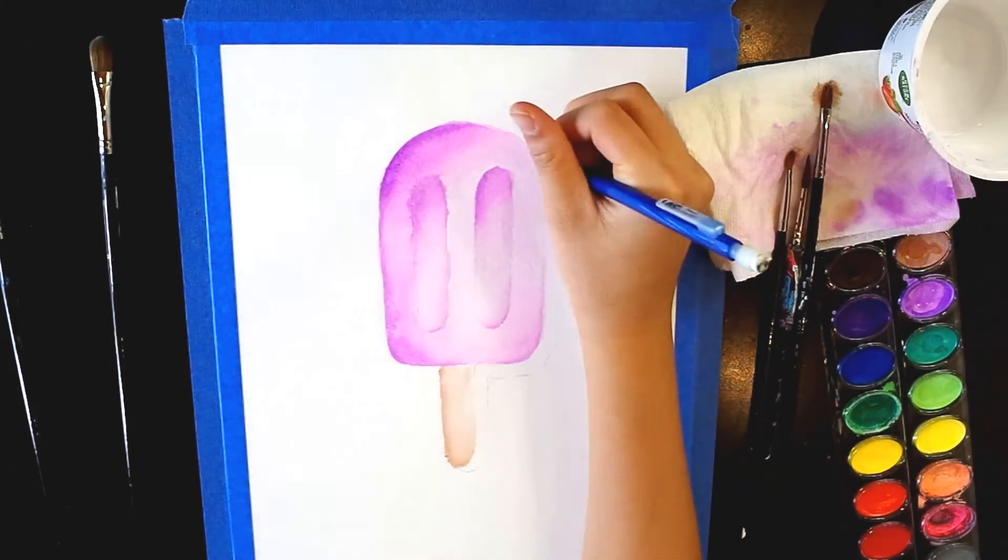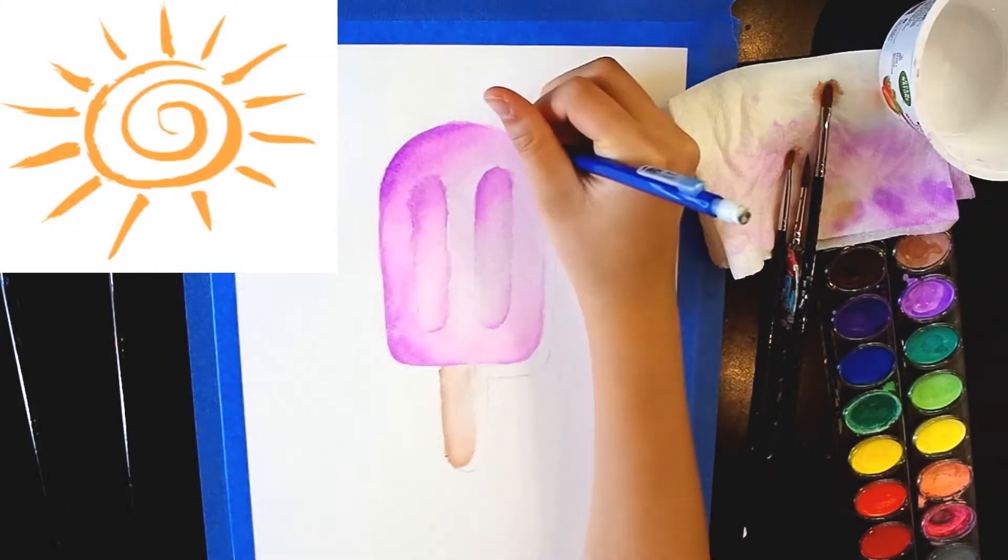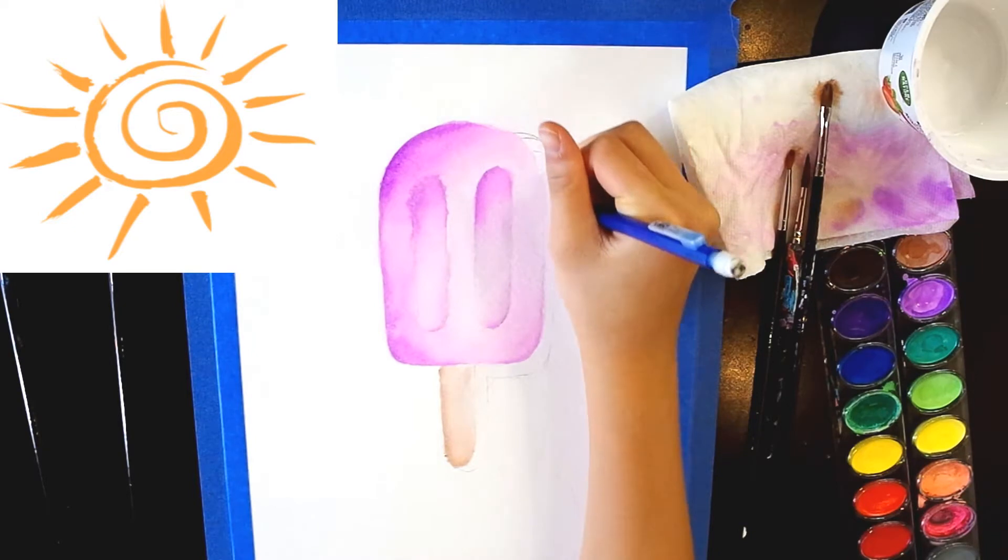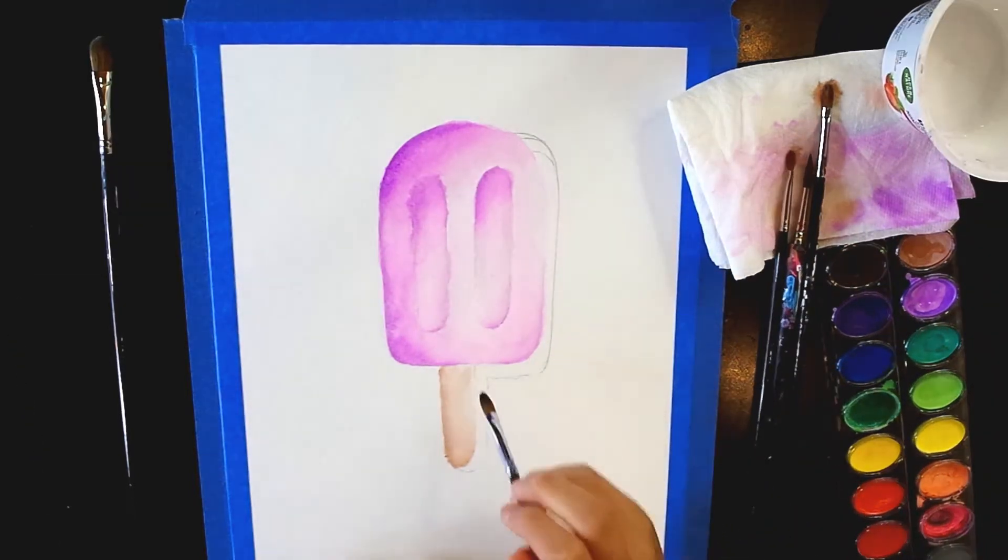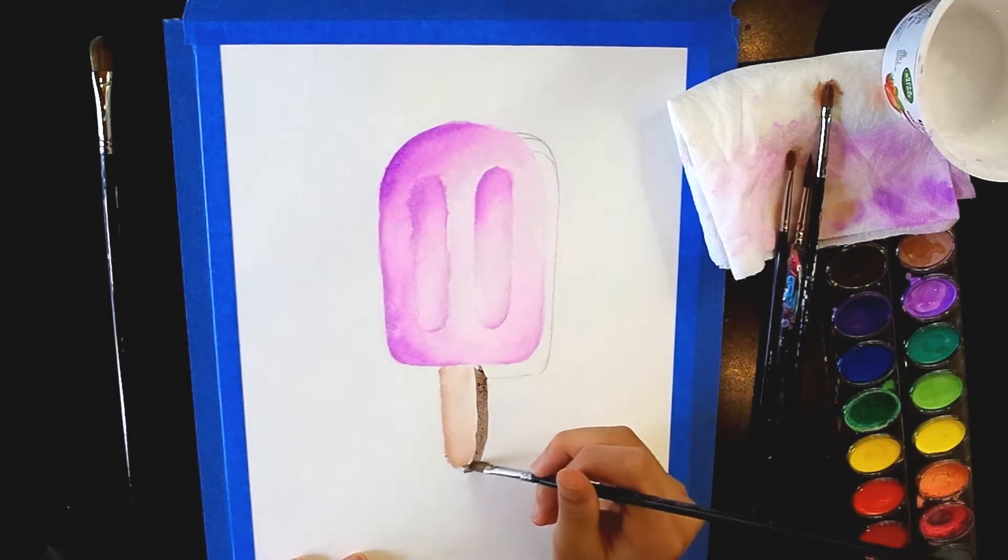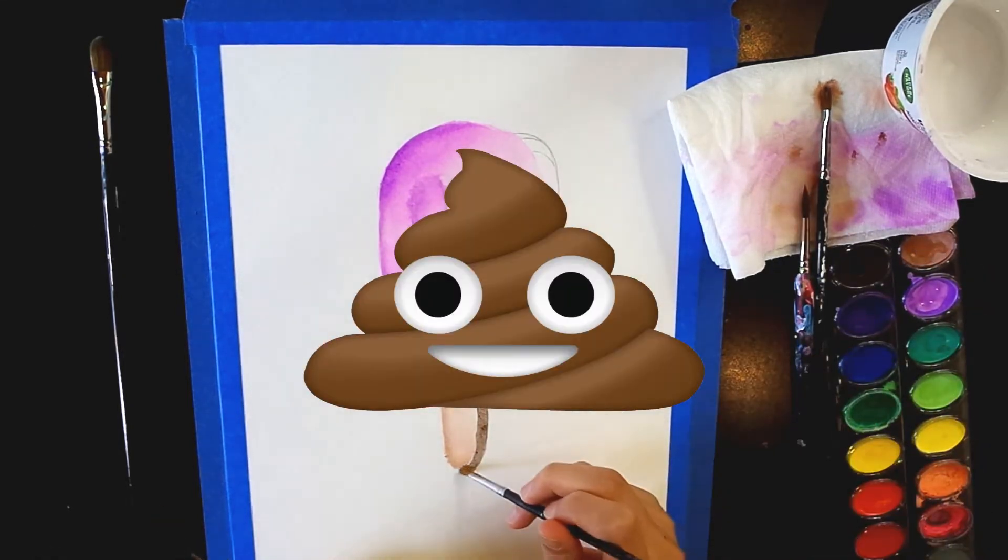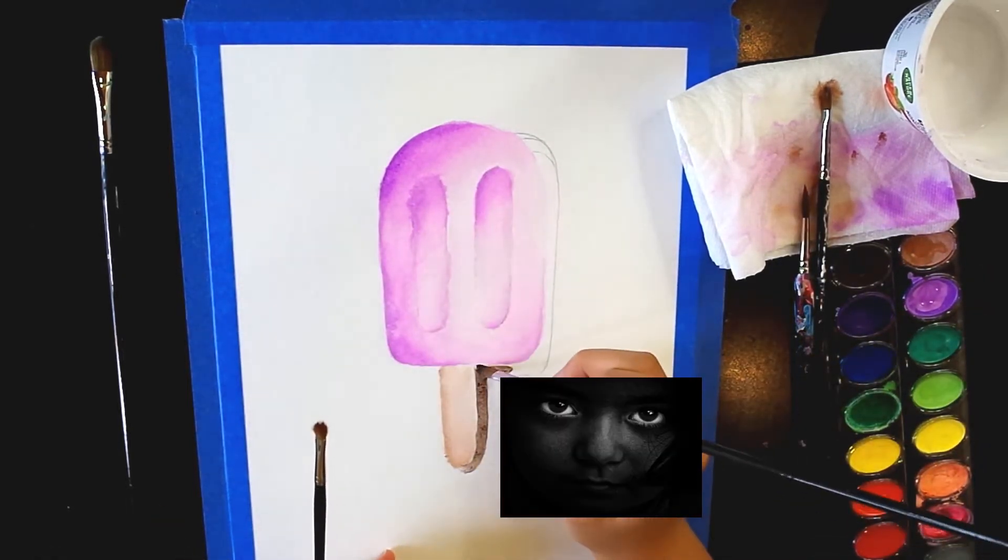Sketch out a shadow. Remember where your light source is coming from. You want your shadow to go the opposite direction from the light. Use black to fill in the shadow. This is supposed to be black but it looks brown. The shadow should be dark because, well, it's a shadow.